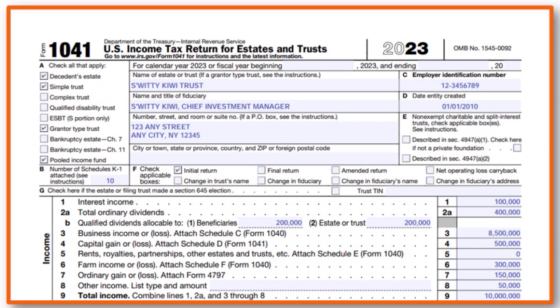If there is anything from A all the way to F that applies to the return, you have to put it here. In our case we have an initial return - not a final return or an amended return. A final return will happen if the estate or trust was dissolved in any way.